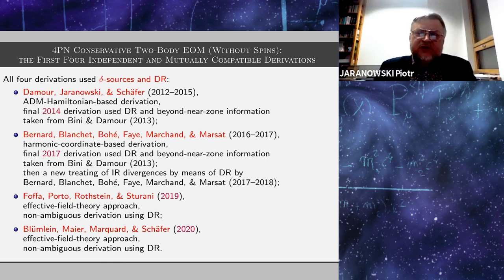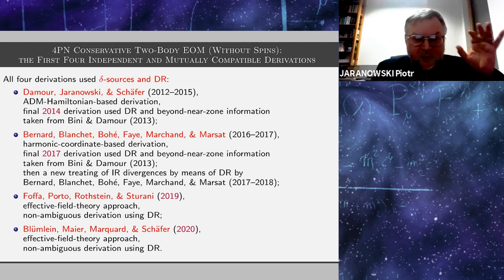For 4PN conservative two-body equations of motion, we have up to now four independent and mutually compatible derivations. All four derivations used delta sources and dimensional regularization. The first one was by DJS published in 2014. The second one was by group of Luc published in 2017. In fact, they published almost at the same time two derivations. The first one used some beyond his own information, and the second one was beyond this because of a new treating of infrared divergences by means of dimensional regularization only. We have still two more independent derivations within the realm of effective field theory approach by Fofa, Porto, Rothstein and Sturani and by Blümlein, Meyer, Marker and Schaefer.